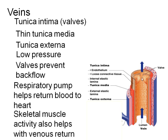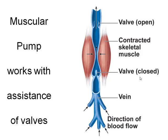The other thing that helps is skeletal muscle activity. Most of the veins run fairly deep, so there are skeletal muscles around them. When the muscles contract and bulge, they push in on the veins and squeeze the blood upward. The reason blood goes in one direction is because when you squeeze in the middle, the valves close if blood tries to flow backwards, pushing the blood on up.